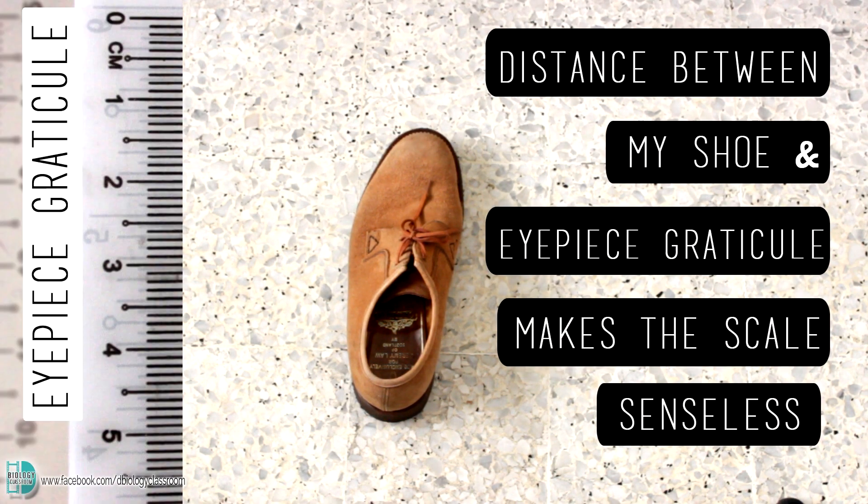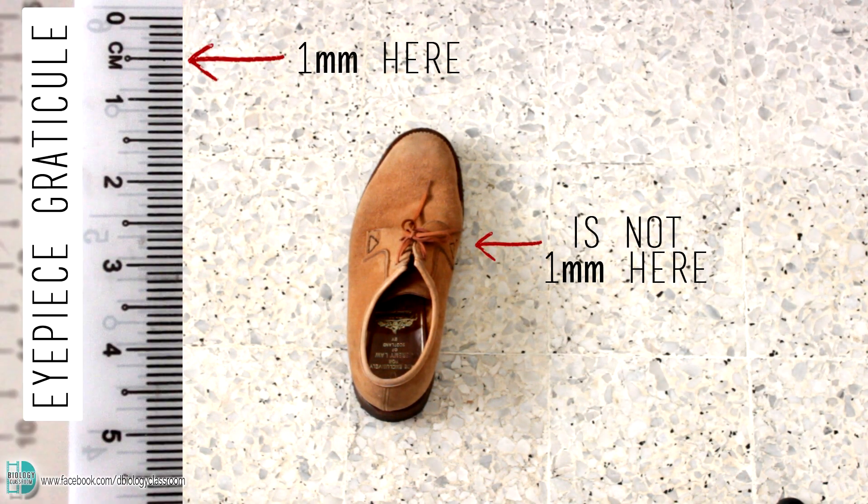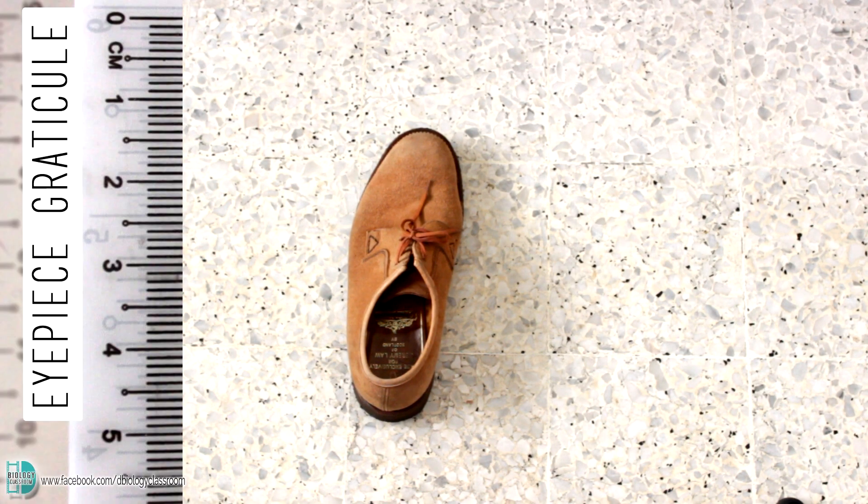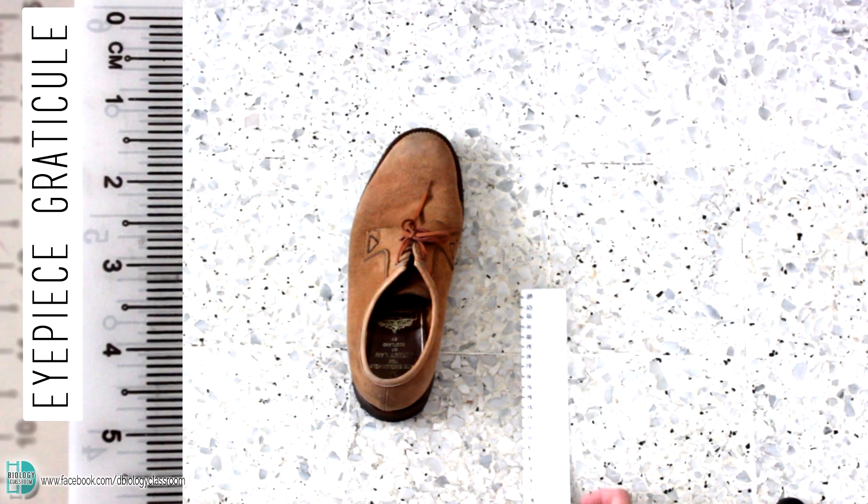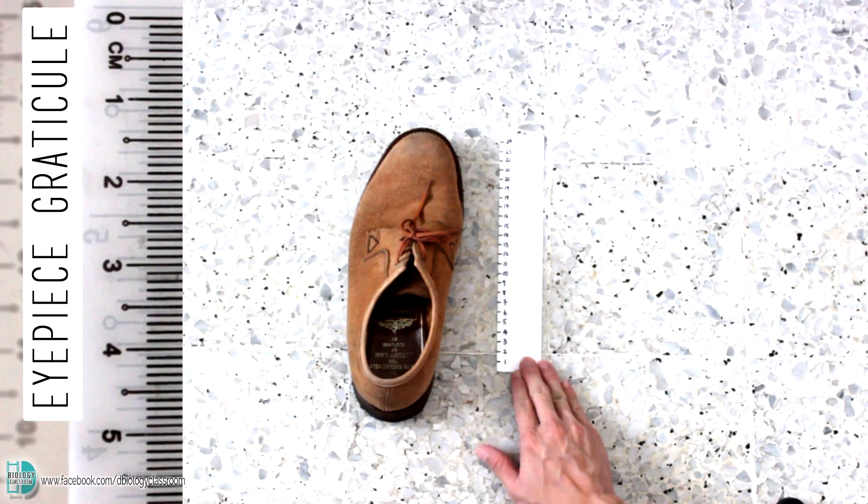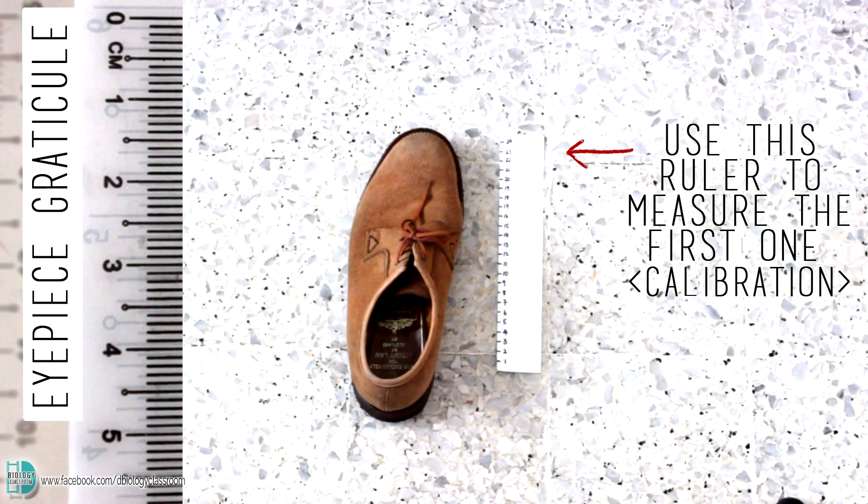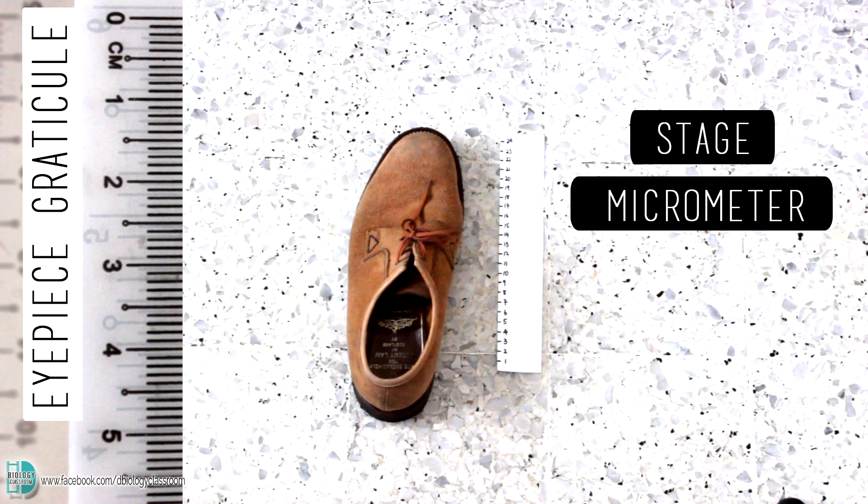The distance between the ruler and the shoe makes the scale on the ruler senseless. 1mm on the ruler is not 1mm on the stage. So if I want to use the scale of this ruler, I must place another ruler at where the shoe is. I can use the second ruler to calibrate the scale on the first ruler. And this second ruler represents the stage micrometer.